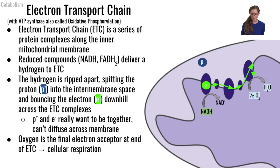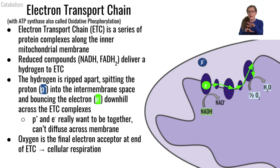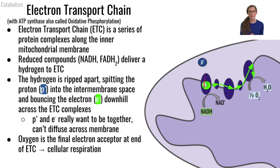The protons and electrons really want to get back together — the electron is negatively charged, the proton is positively charged. However, they are being ripped apart and forced into separate spaces. So there is a big potential energy drive for the protons to get back with the electrons again.